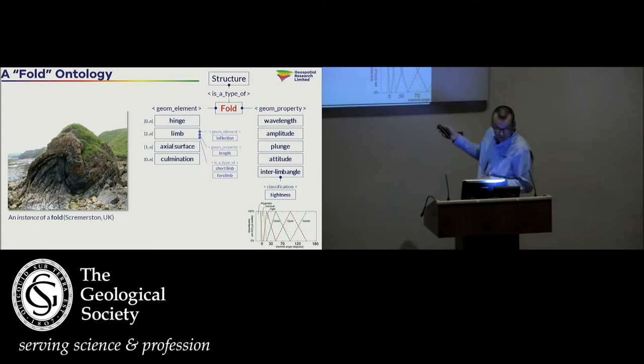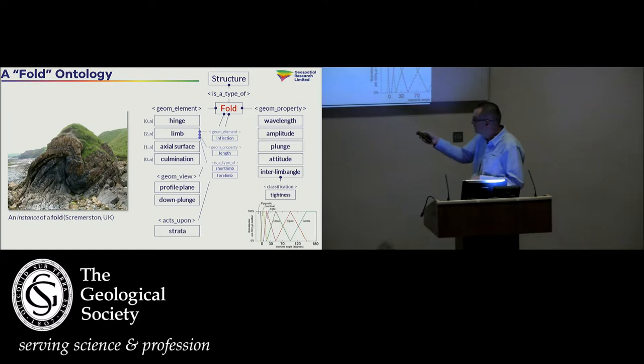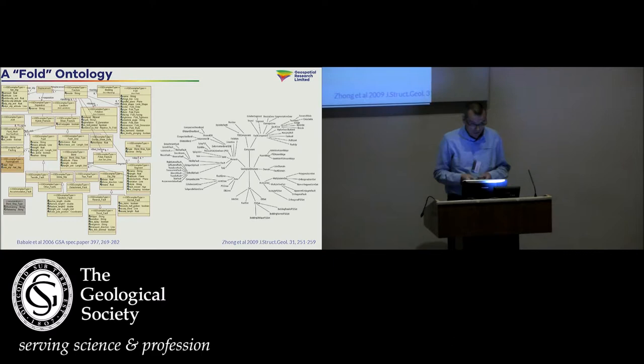We can take different properties and use those as a basis for classification. In this case, interlimb angle is used to classify fold tightness. We can do that in a crisp way or in a fuzzy way. In this case, we've got different amounts of tightness giving us different classifications of fold interlimb angle. We have other types of properties. We have different ways of viewing this concept called fold, particularly ways that are well understood to geologists. The profile plane view, the down plunge view, and so on. This concept can act upon other things. Fold can act on strata. It has actions related to it, folding. It has fold mechanisms. Different things can act upon it.